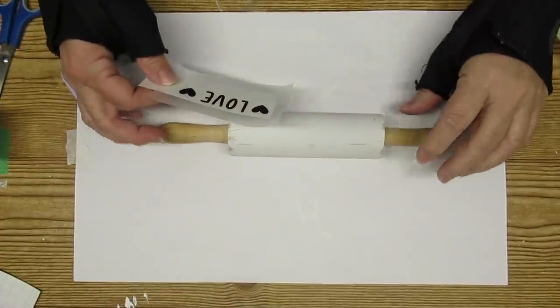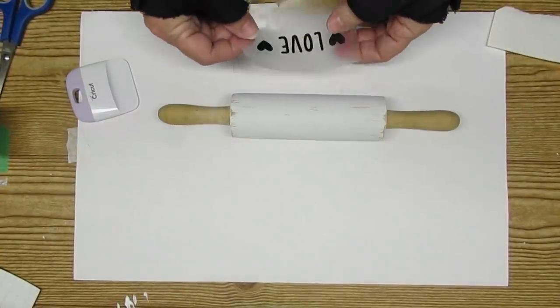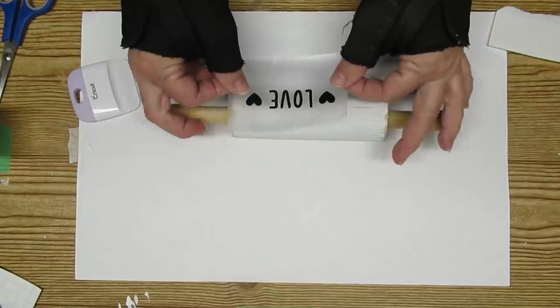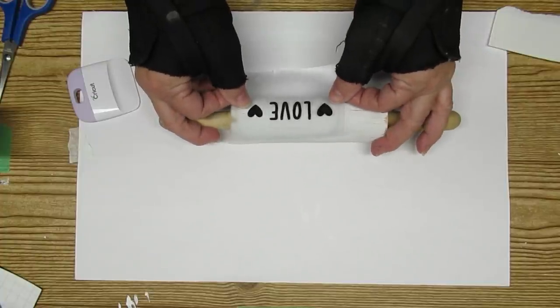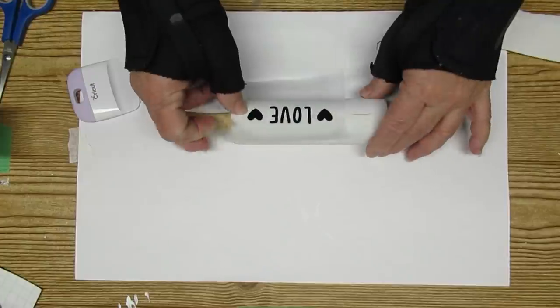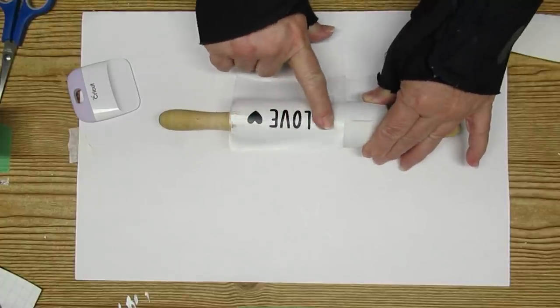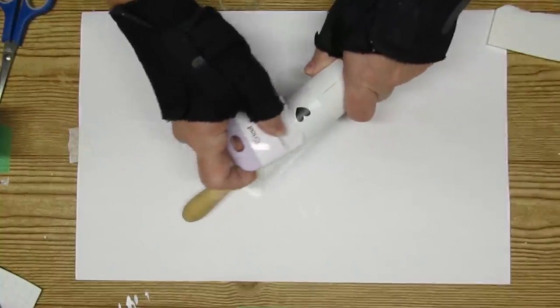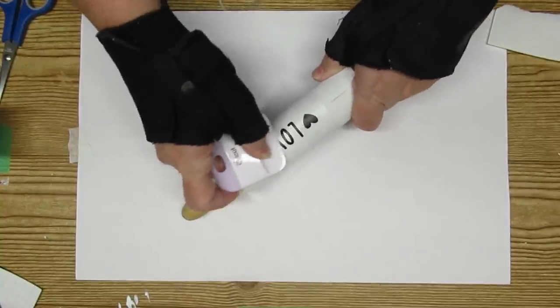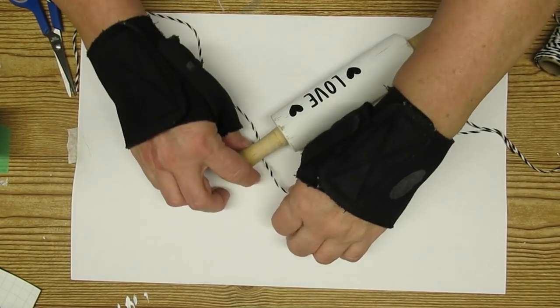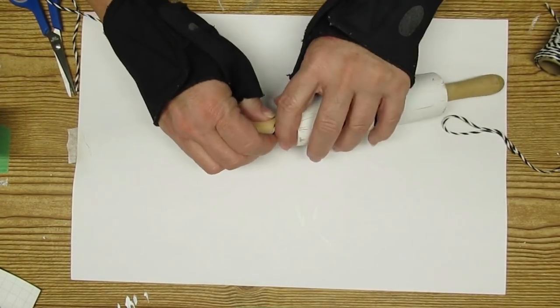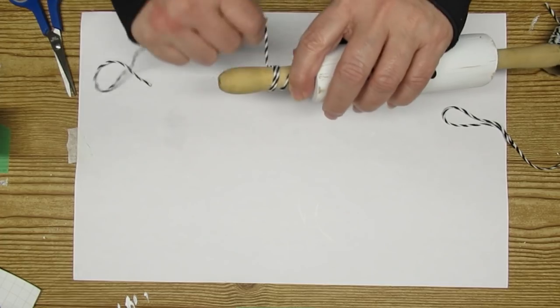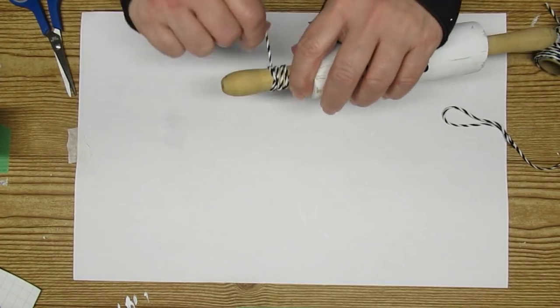This is another super easy project. I went rummaging through my stash and found this little rolling pin that I had previously painted white and distressed. I again went to my Cricut and just cut out this love decal with a couple of hearts and I'm just going to place that on the one end of the rolling pin. Using some of this black and white baker's twine I'm just going to wrap it around a few times and then just tie it off with a sweet little bow.